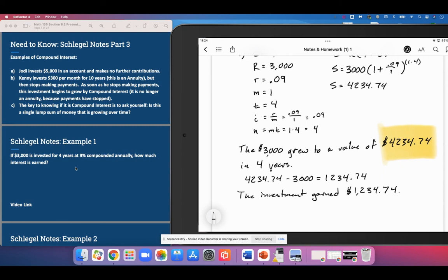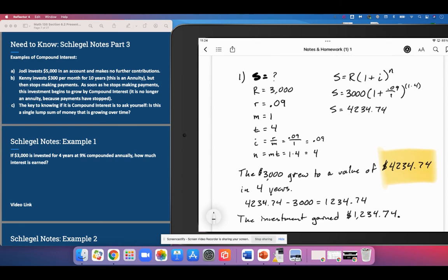The investment made one thousand two hundred and thirty four dollars and seventy four cents. These people did nothing, they just put this money in the account, they walked away, they came back in four years and they made 1,234.74 for doing that. I'll leave this here, you can look at my work and if you need to pause I'm going to go ahead and end this video and move on to the next problem.